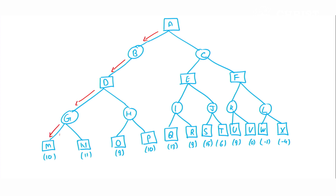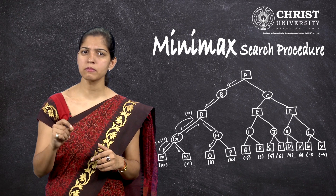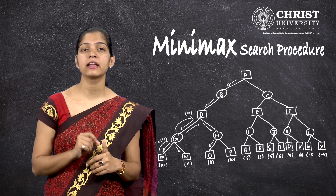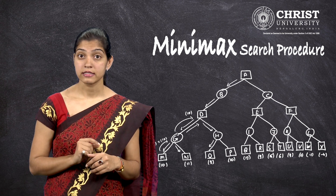Following the DFS search procedure, we reach the terminal node having cost 10, then back up this value to the opponent node. We explore one more node and find its cost is 11. Since the opponent can choose either 10 or 11, and their intention is to minimize my profit, they will pick the node having minimum cost — that is 10. We back up this cost to the opponent player node, making it 10, then back it up to node D. We then explore another branch, make the same comparison between child nodes of the same parent, and select the minimum cost to back up to the parent node.